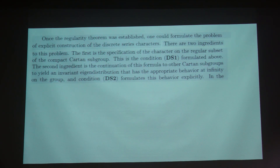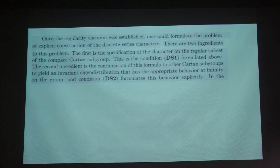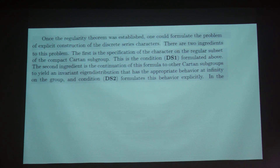The condition — which later on is called the condition of being tempered — means it is also an invariant eigen-distribution. If you know the distribution on the compact Cartan, it does not determine the distribution on other Cartan subgroups, but you already know a lot of examples. For example, the unitary principal series — all those distribution characters are zero on the compact Cartan. So to get a unique extension, Harish Chandra imposes this growth condition. But that will only intensify the mystery further because the unitary principal series are all zero on the compact Cartan and they are also tempered distributions.